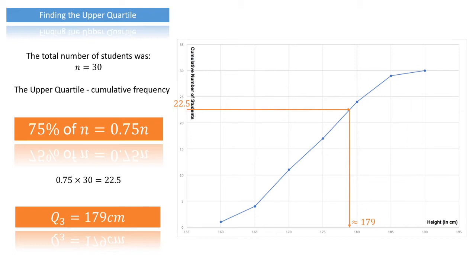What this means is that 75% — three quarters — of our students measured less than 179 centimeters. It also means that one quarter, or 25%, of our students measured more than 179 centimeters, so they were taller than 179 centimeters.